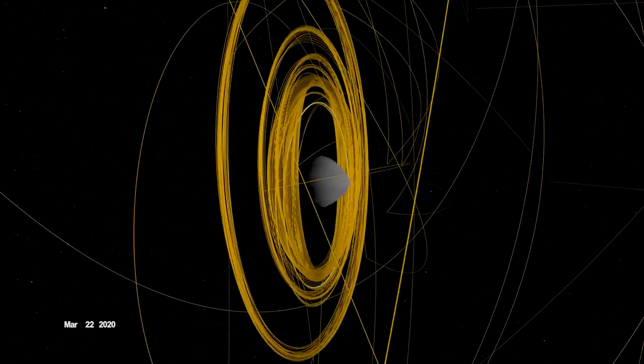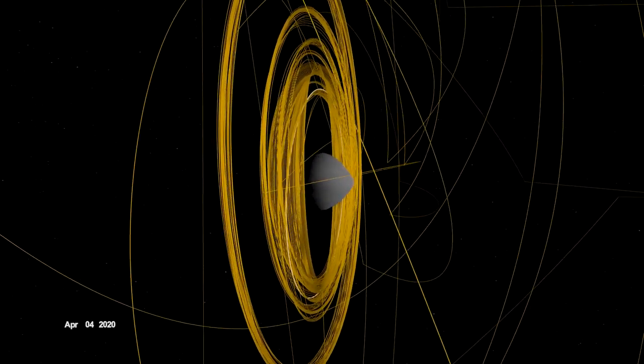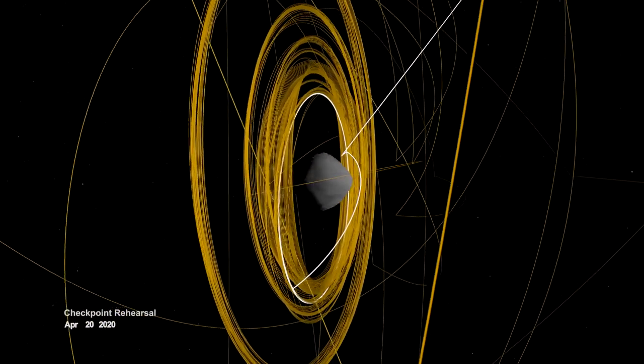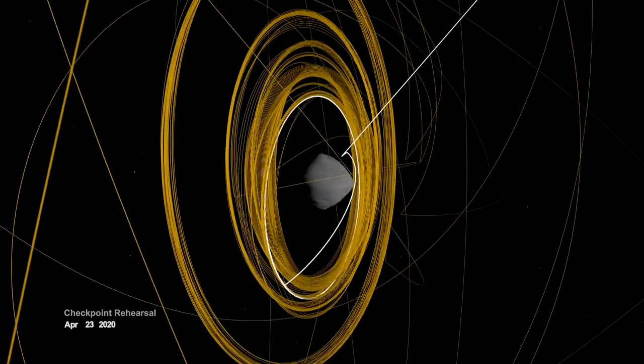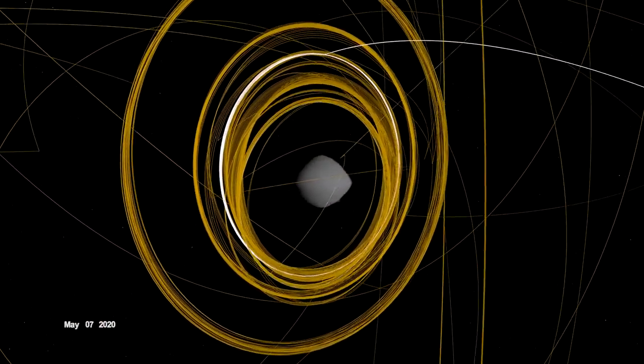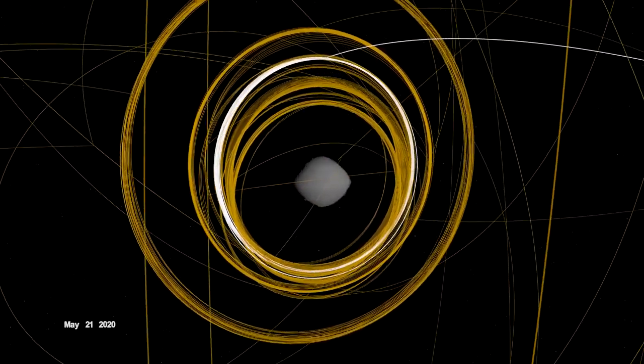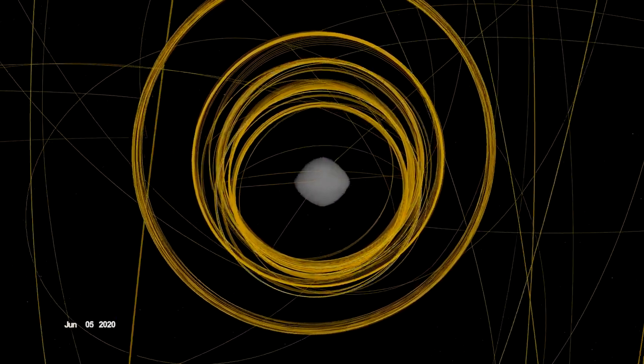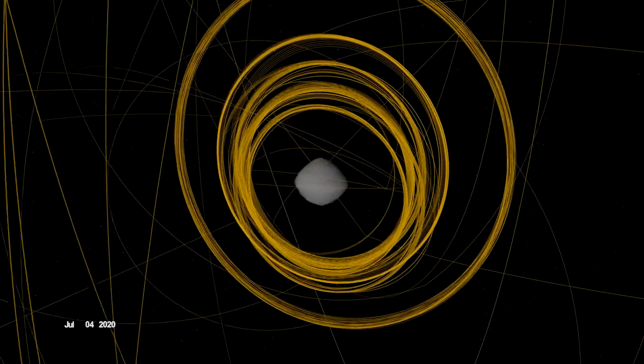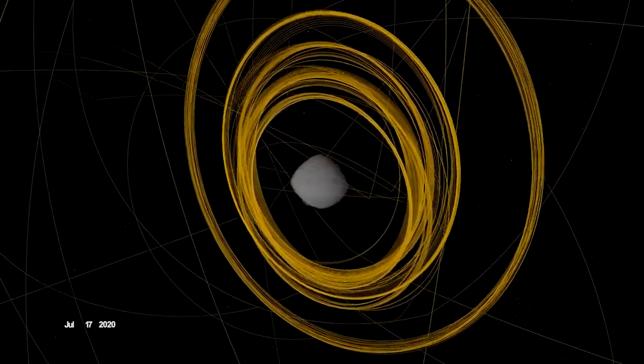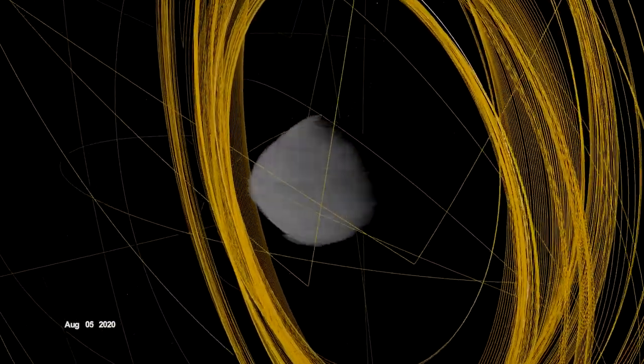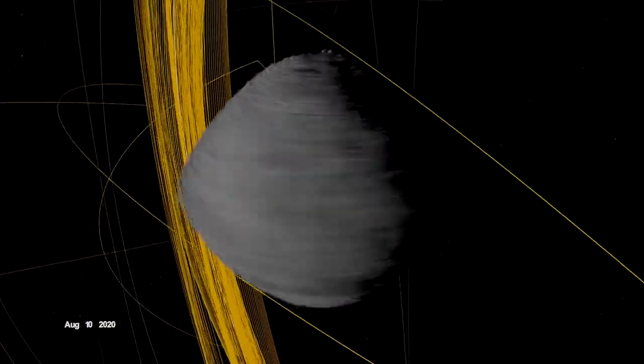In mid-April, OSIRIS-REx performed the first of two rehearsals prior to sample collection. It navigated to a predetermined checkpoint about 125 meters above Bennu, then descended to within 65 meters before backing away. After the checkpoint rehearsal, OSIRIS-REx flew one final reconnaissance sortie over site Osprey, then made a series of high-altitude maneuvers while rebooting its onboard processor and preparing for its second rehearsal of the sample collection event.